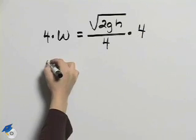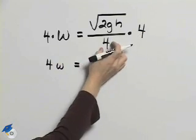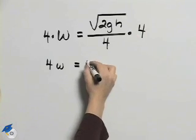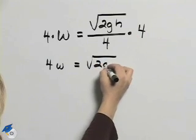And when we do that, we'll end up with 4w. The 4's divide out and so we'll have the square root of 2gh.